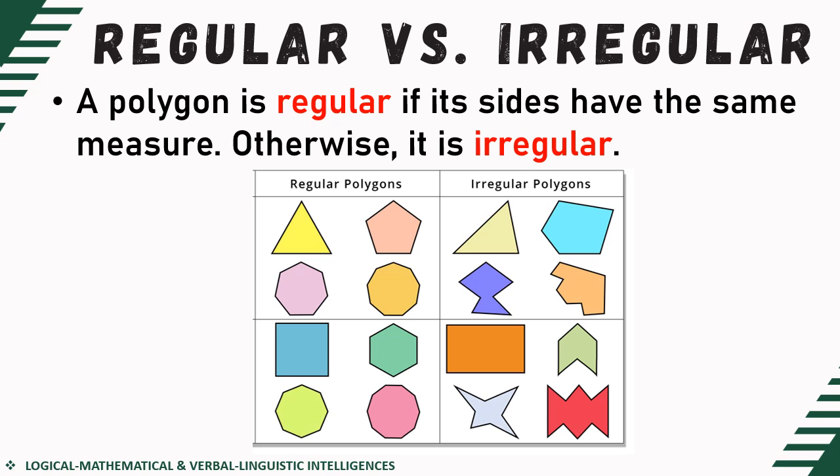Now, if we talk about the measure of the sides or the length of the sides of the given polygon, we can classify them as regular or irregular polygons. Based on the length of the sides, a polygon is regular if its sides have the same measure. Otherwise, it is irregular.